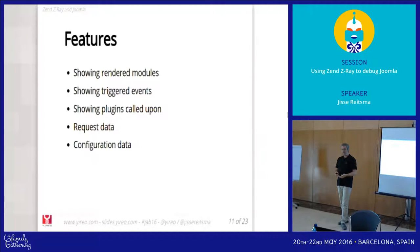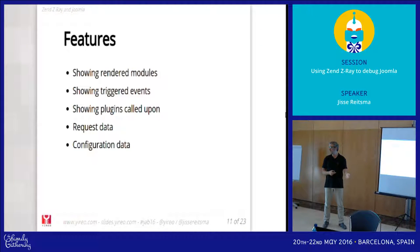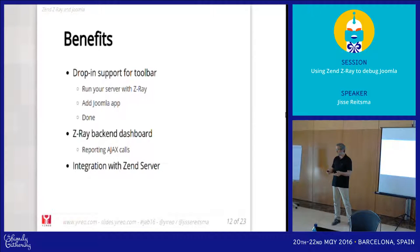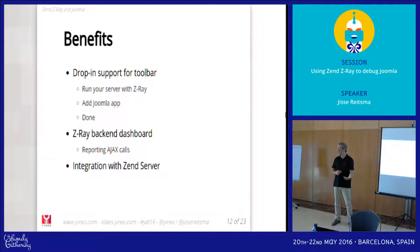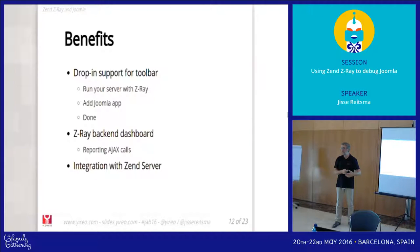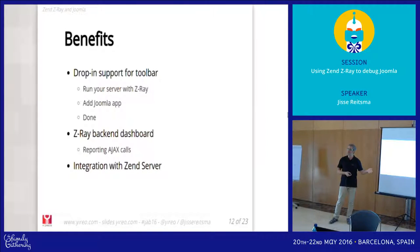The features in this plugin include showing the rendered modules, the triggered events — so whenever a component triggers an event that's listed — and plugin listening. There's also basic stuff like request data and configuration data. The benefit of this solution is that it's a drop-in solution. You install Z-Ray on the server, install the Joomla extension, and then whatever Joomla site you run on top of it, it's automatically detecting that Joomla is there.